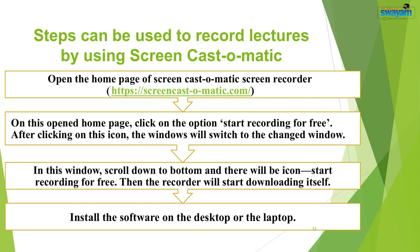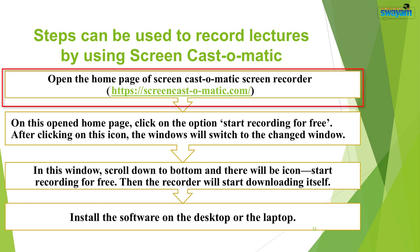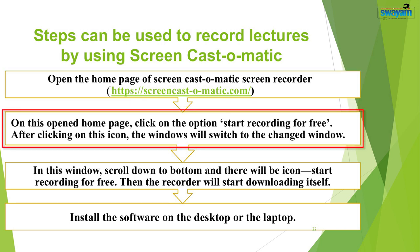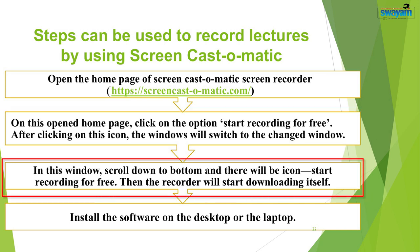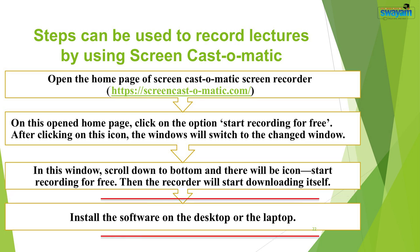To record lectures using Screencast-O-Matic, first download the software from the Screencast-O-Matic homepage at https://screencast-o-matic.com. Open the homepage, click on 'Start Recording for Free', and scroll down to find that icon. The recorder will start downloading itself. After the complete download, install the software on your desktop or laptop and keep a shortcut on the desktop. This software is available free of cost as well as in paid versions.